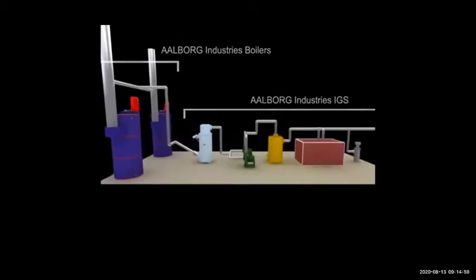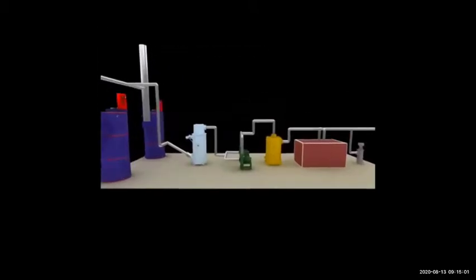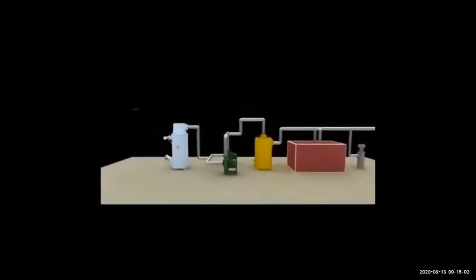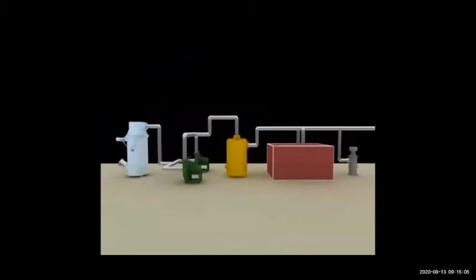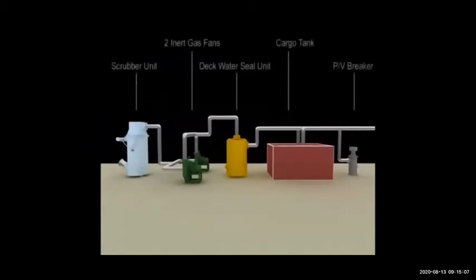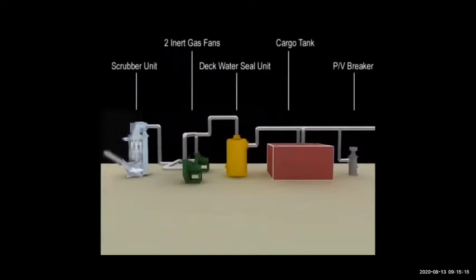After the boiler, the inert gas plant starts. Inert gas is coming out from the boiler and then it will go to the scrubber unit, then inert gas fans or blowers, then the deck water seal unit, cargo tanks, and PV breaker.